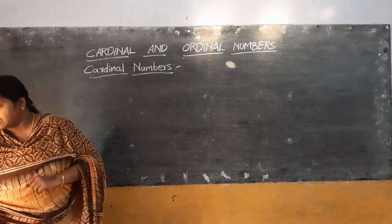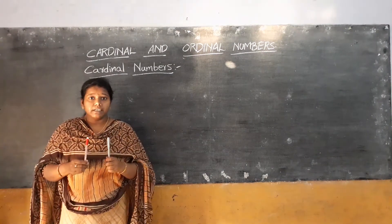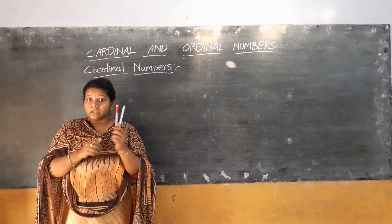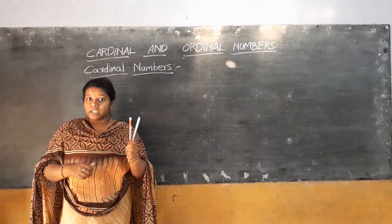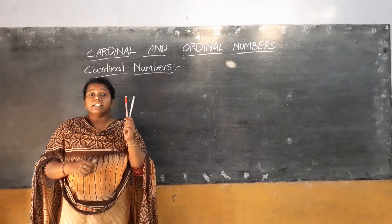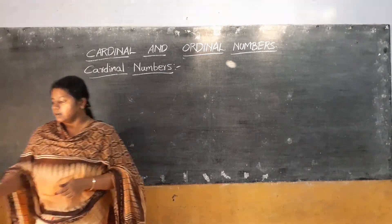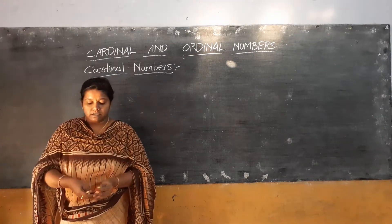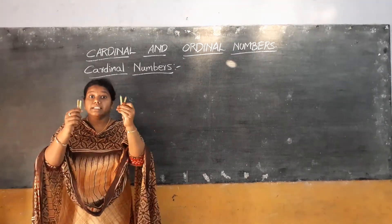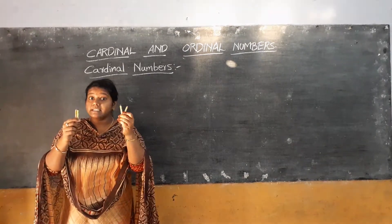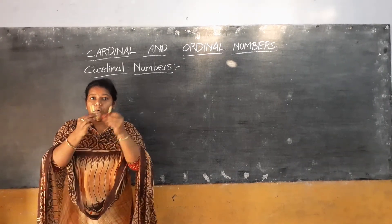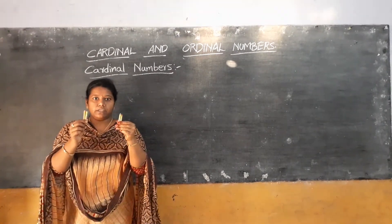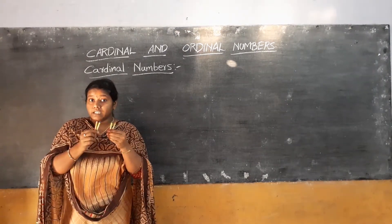See the example here. How many pens are here? Count them — one and two. So here how many pens are there? There are two pens. So here two is the cardinal number. Next, see another example. These are crayons. How many crayons are there? One, two, three and four. There are four crayons here. So four is called a cardinal number.